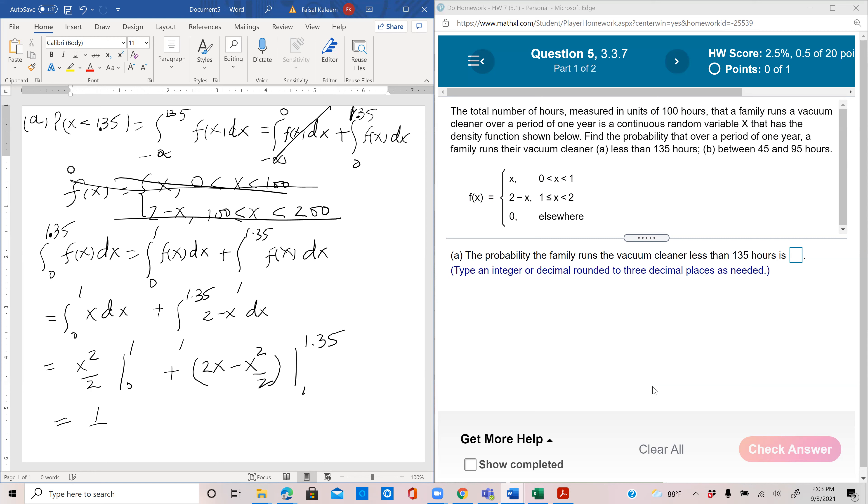This is 1 by 2 minus 0, plus here when you substitute, we have 2 times 1.35 minus 1.35 squared by 2, minus the lower limit minus 1.35.